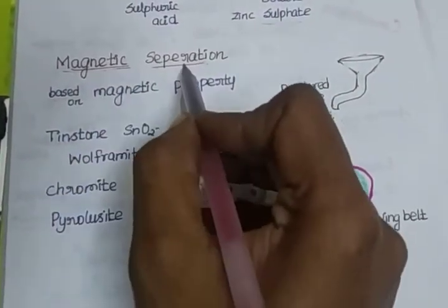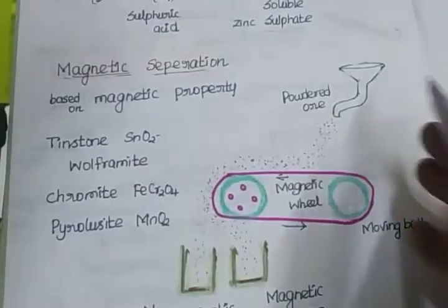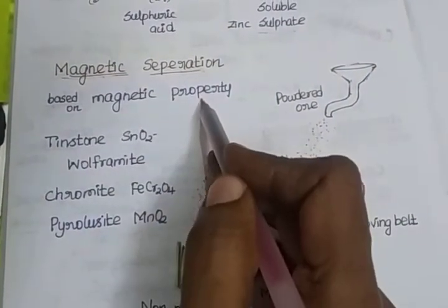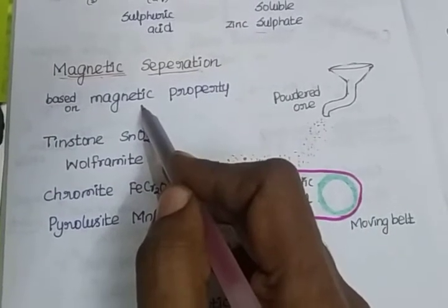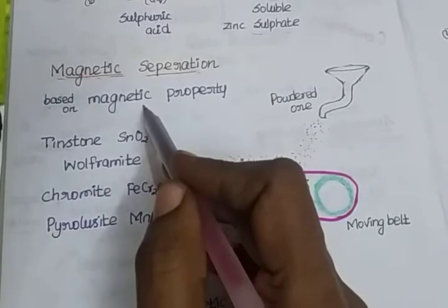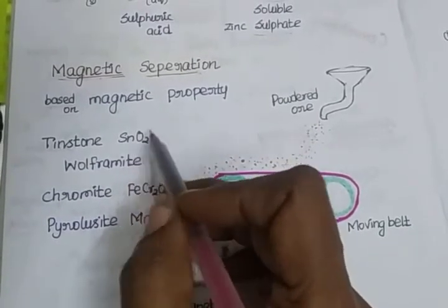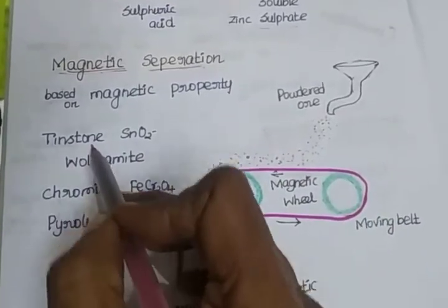Magnetic Separation is used to separate metals. It is based on the magnetic property. Metals that have magnetic properties can be separated using this method.